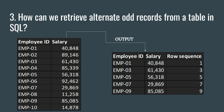Hey everyone, welcome to this SQL interview series of Data Millennials. In this video we are going to discuss another SQL interview question: how can we retrieve alternate odd records from a table in SQL? In our previous video we discussed how to retrieve alternate even records from a table.